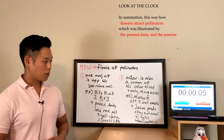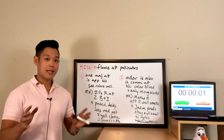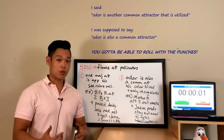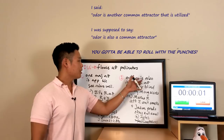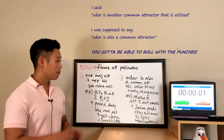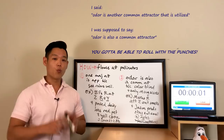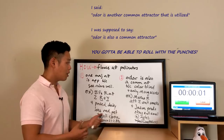I didn't do that on purpose — I said 'odor is another common attractor that is utilized' when I should have said 'odor is also a common attractor,' but I went off script and had to improvise. I'm emphasizing this because that's going to happen to you sometimes. When it does, don't freak out — roll with the punches and play it by ear. Think on your feet, because sometimes even with great notes you might say something out of habit. When that happens, don't panic.